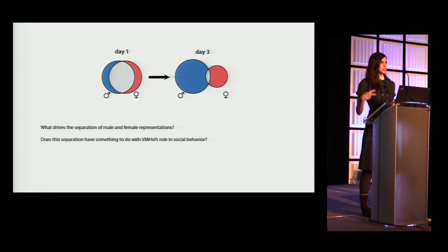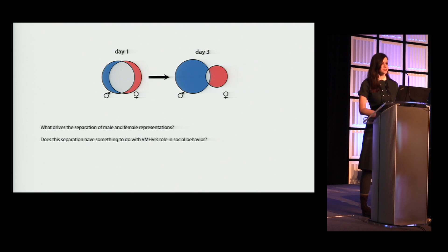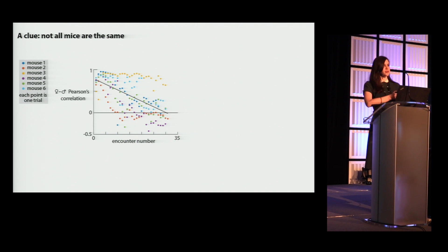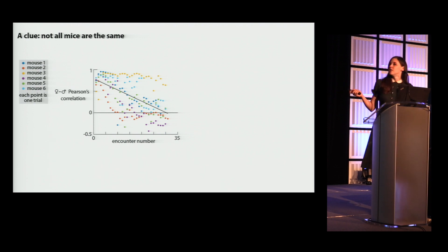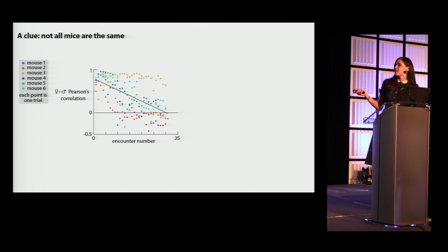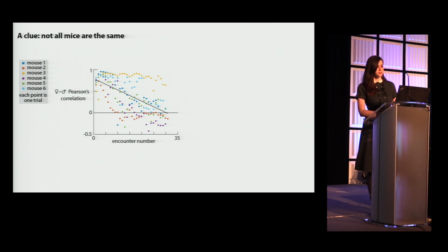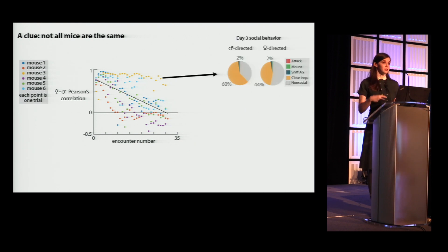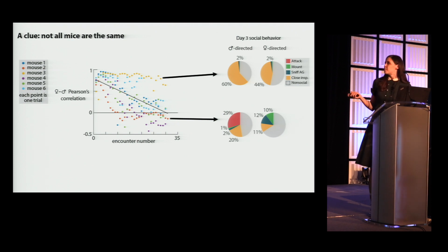A clue came from looking at trials from individual mice. For each trial, I'm plotting the Pearson's correlation between the intruder sex on that trial and the opposite-sex intruder representation on immediately preceding or following trials — a moving representation of male-female separation over time. Mice form separate representations at different rates: some separate very quickly and stay separated, some separate more slowly, and some don't really separate at all. The mice that didn't separate still interacted with conspecifics, but their interactions were very different — mostly sniffing, without any attack or mounting.